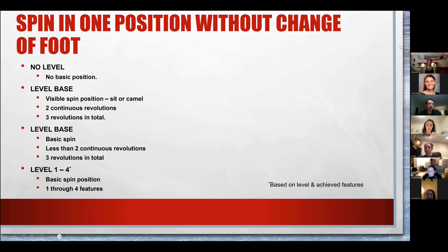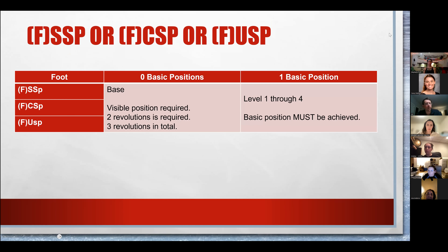As a breakdown: for either a flying or basic sit spin, flying camel or camel spin, flying upright or upright spin — no basic position is mostly going to be level base with two required revolutions and three total. With the basic position, you can see how you get level one through four.